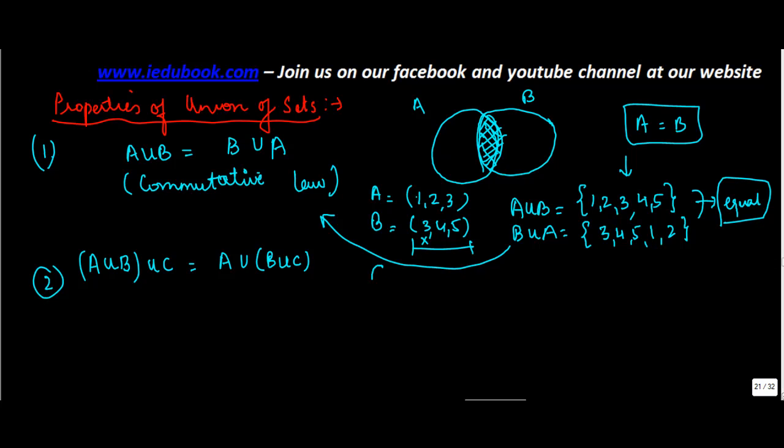So if suppose you had C is equal to 5, 6. Now A union B you know is this, union C. So A union B union C will be what? It will be 1, 2, 3, 4, 5 which is this thing, plus this. 5 is common, so I just add 6 here.